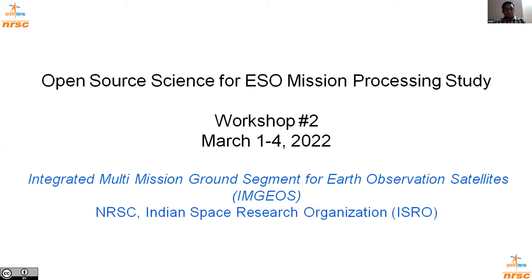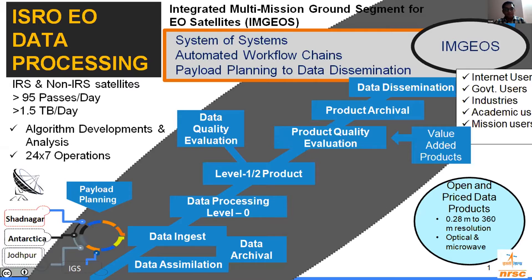In order to process and disseminate Earth observation data, NRSC has set up an Integrated Multi-Mission Ground Segment for Earth Observation Satellites, also called IMGOS. IMGOS is basically a system of systems set up at the Shabnagar campus. This facility is equipped with state-of-the-art data acquisition systems receiving data from various satellites in S, X, Ka, and Ku bands. NRSC has set up ground stations at Shabnagar, Antarctica, and Jodhpur, and data is also acquired at Svalbard and various other international ground stations.